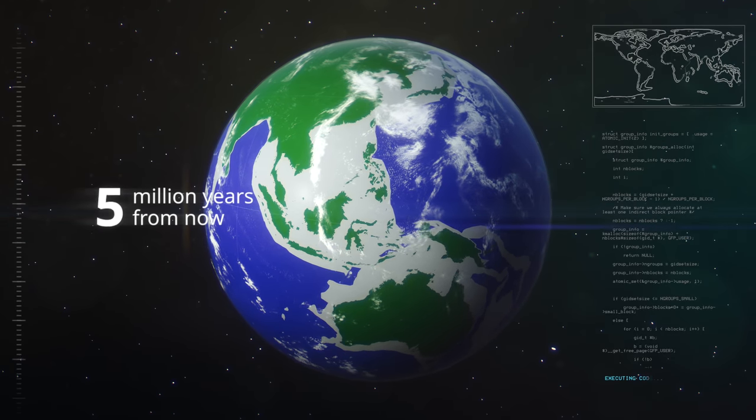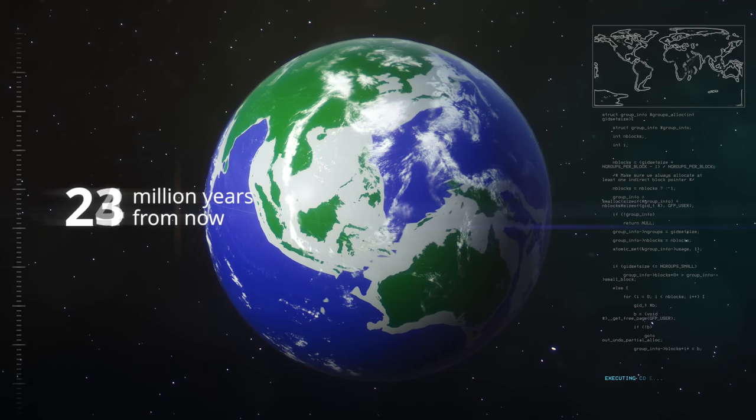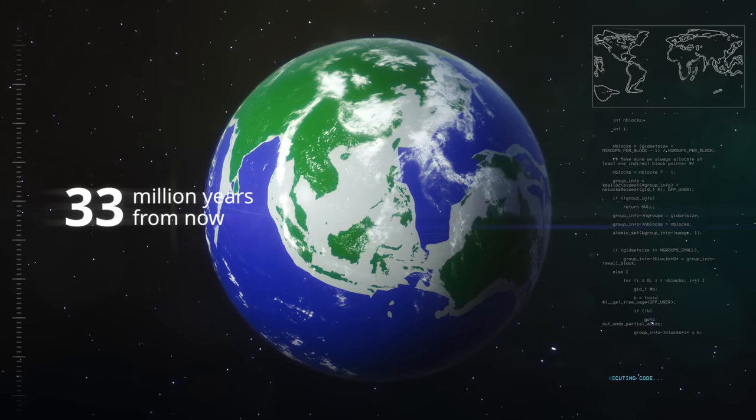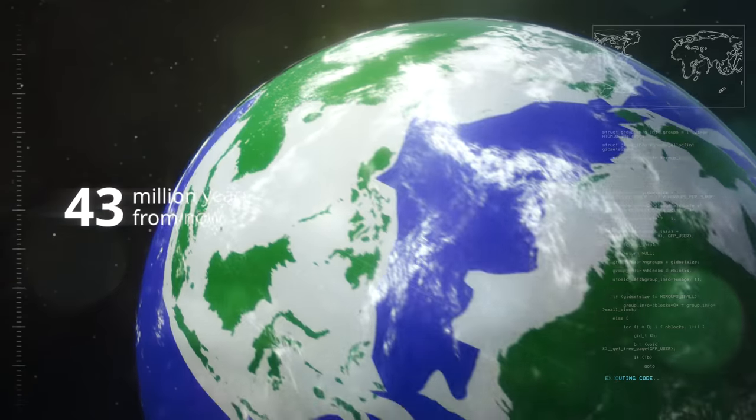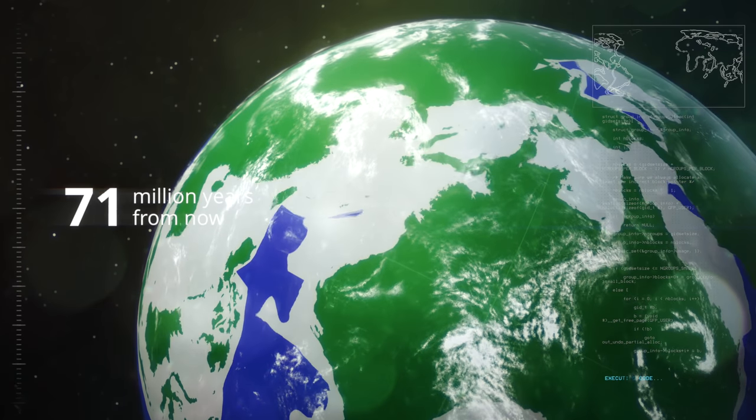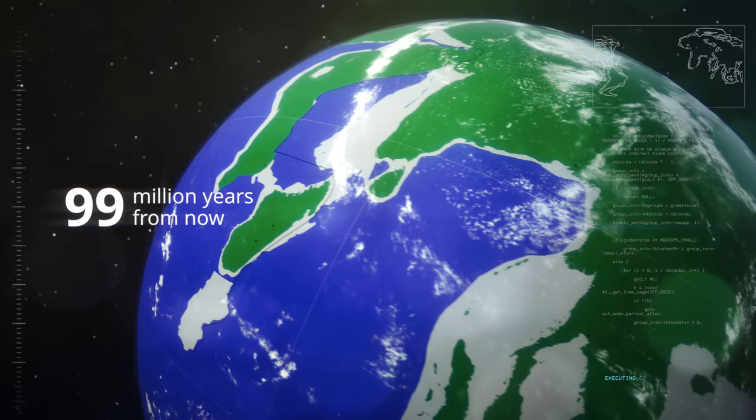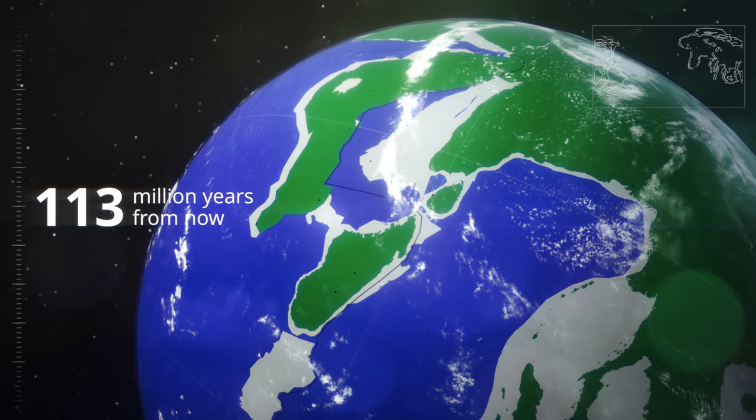Using data from present mountain belts, the Utrecht geologists have now deduced some rules of mountain building. Using these rules and a model of future continental movement, they can predict how subduction will transform the present-day geography into mountain belts in a future that lies immeasurably far away.